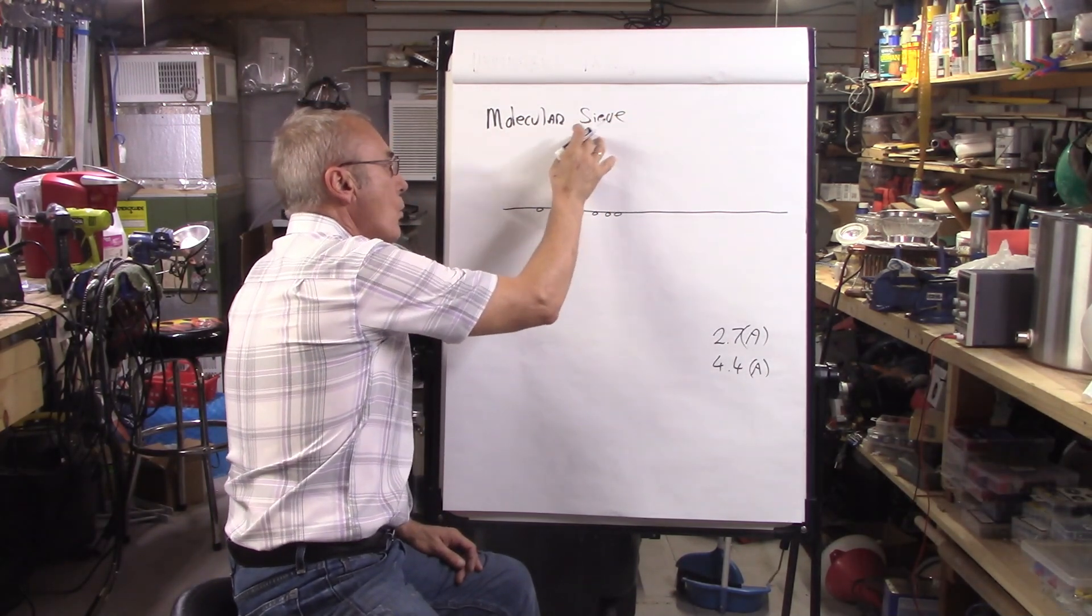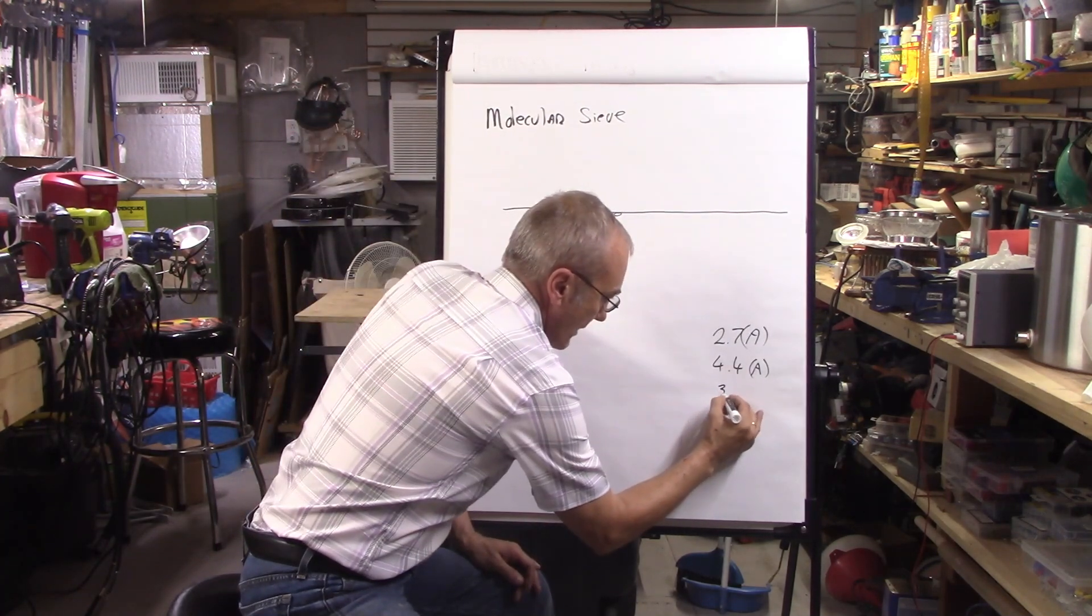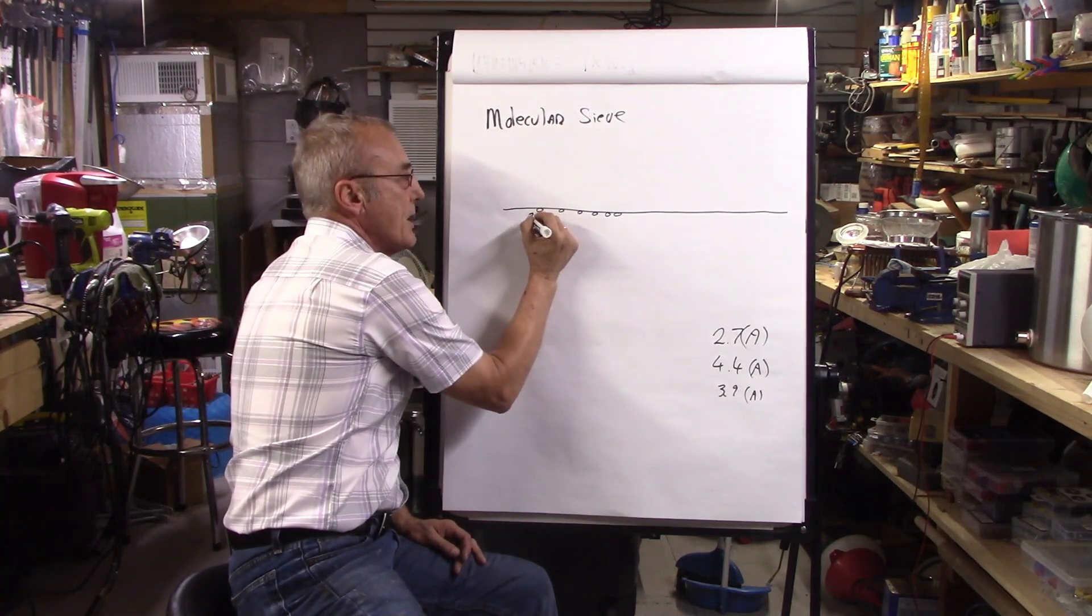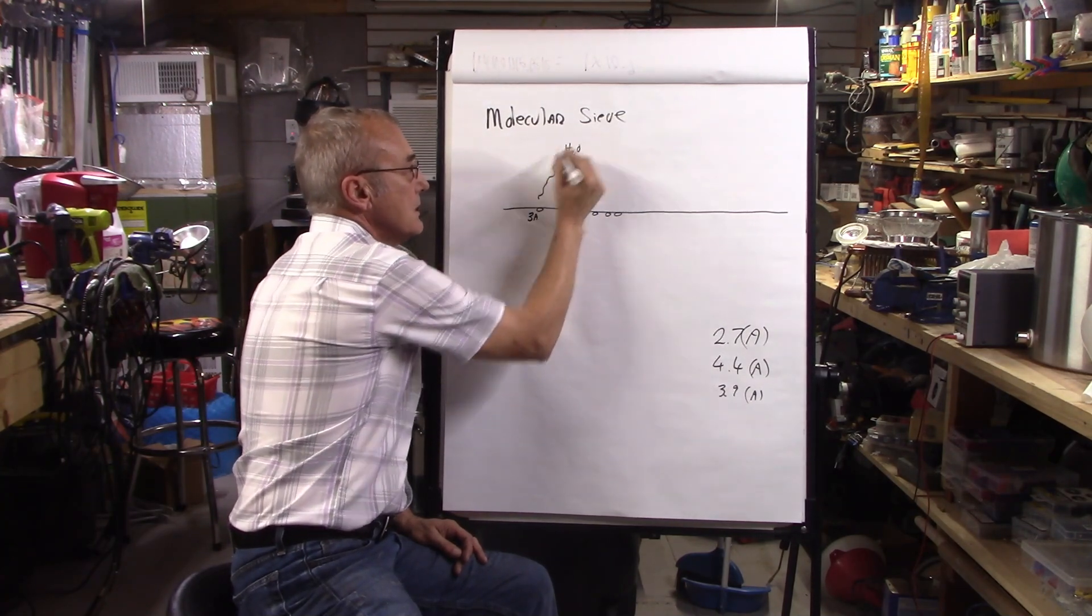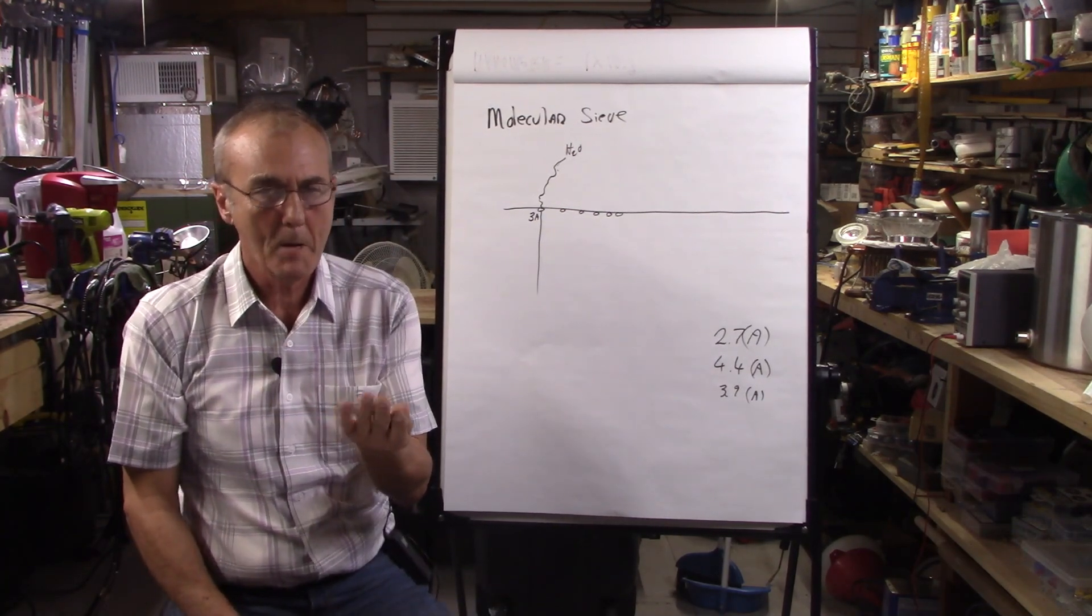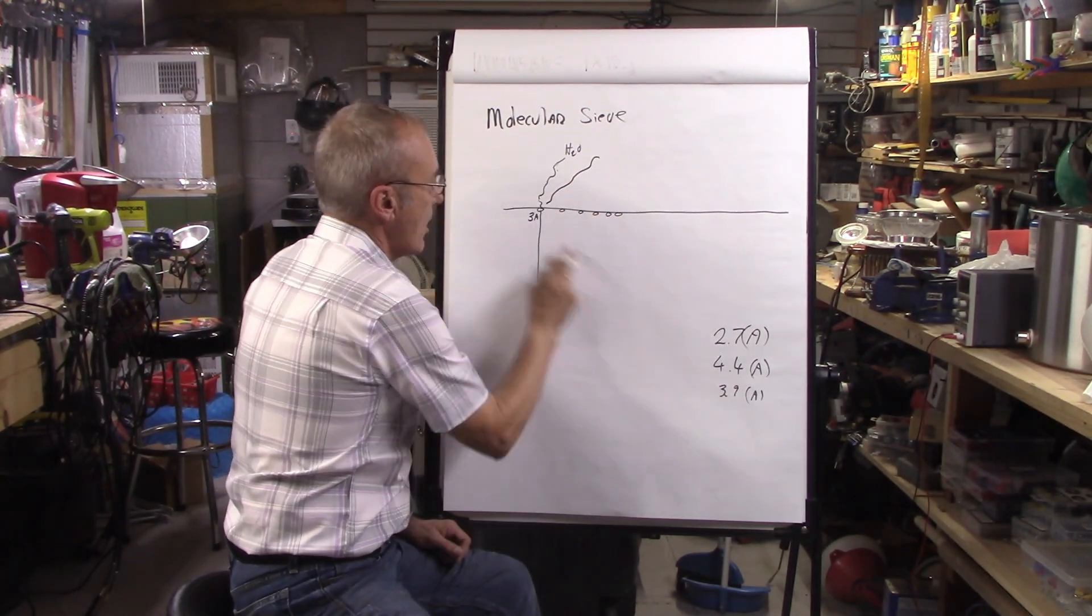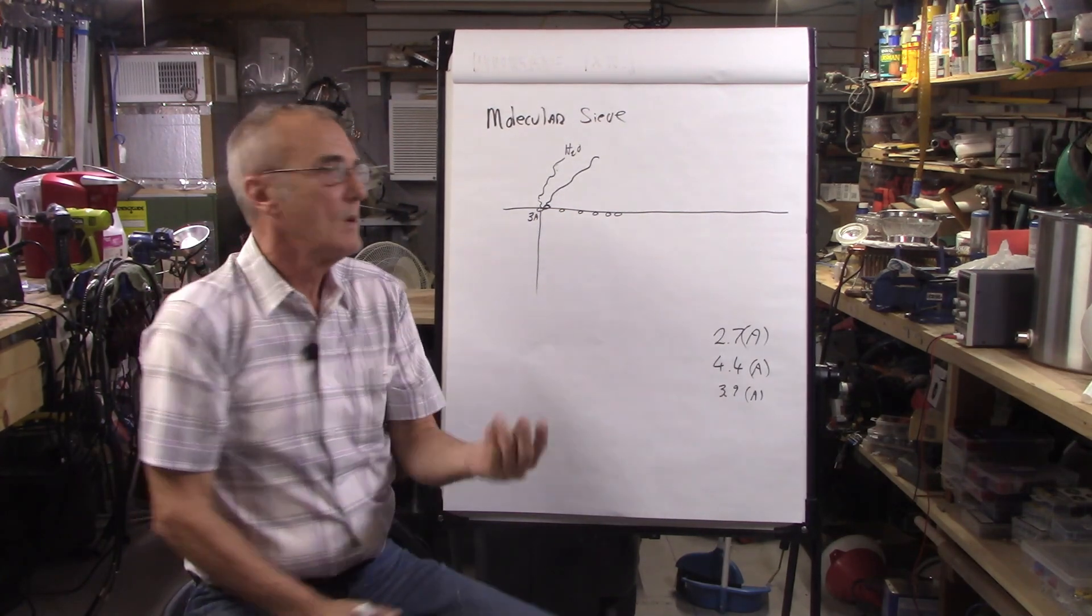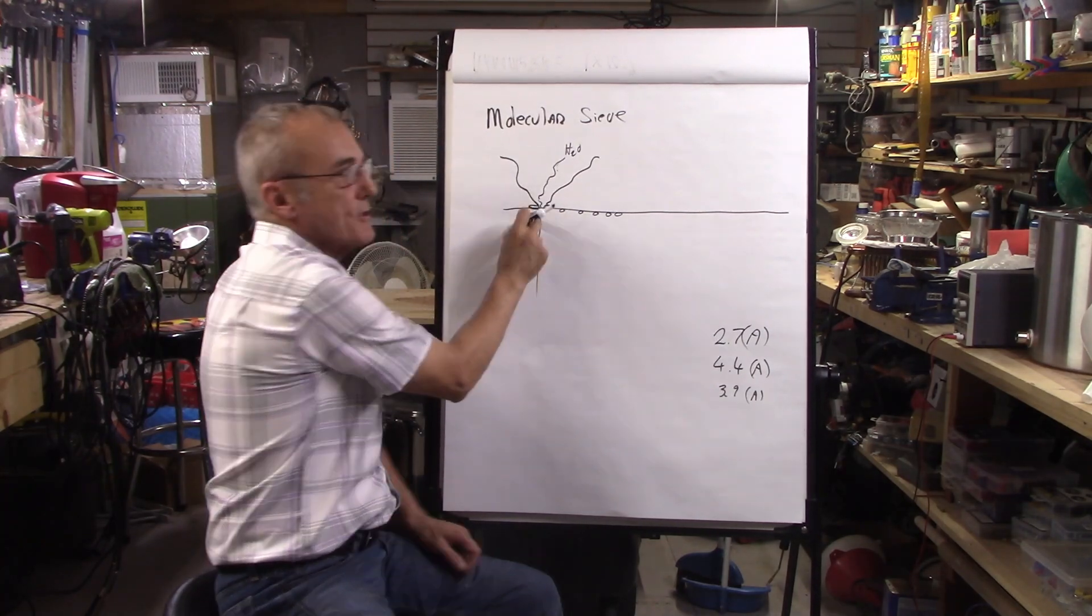And I pour water and ethanol here, or even methanol because methanol is 3.9 angstroms, what will happen is in this three angstrom hole, that water molecule is going to go right through that hole and drop out. Your methanol is a little bit too large for that three angstrom hole, so it's just going to sit here and wait. Your ethanol, same thing, it's just going to sit up here. It just can't get through that hole.